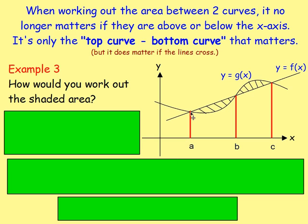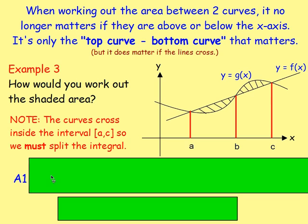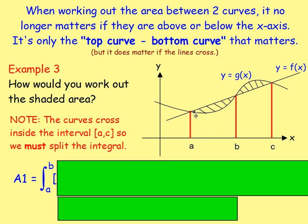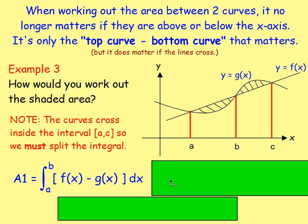Next: how would you work out the shaded area? You've got y equals f of x and y equals g of x, and the curves are crossing inside the interval AC. The very start of the area is at A, the very end is at C, and the lines cross at B. Because the curves cross inside the interval, we have to split the integral. For area one, between A and B, the top curve is f of x and the bottom is g of x, so that area would be f of x minus g of x, integrated between A and B.